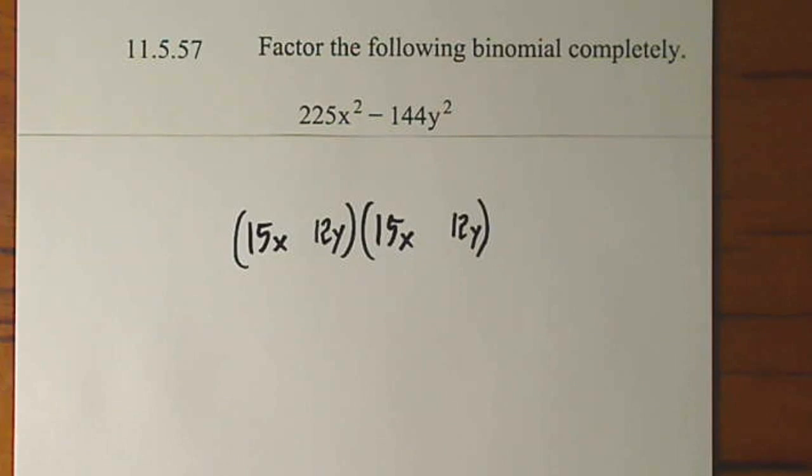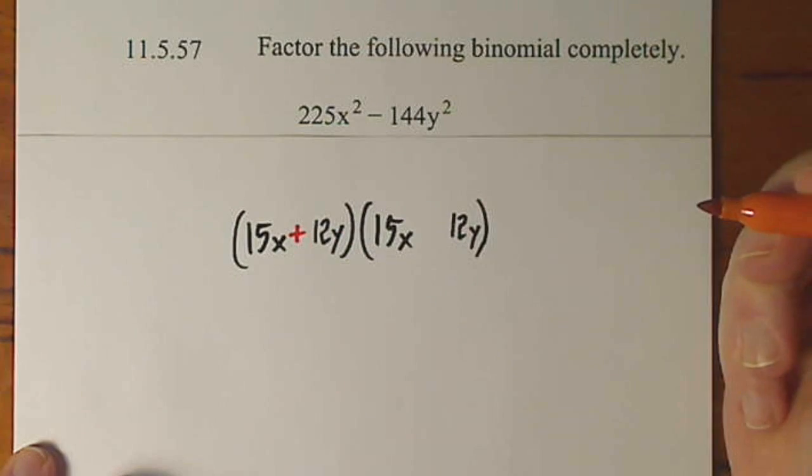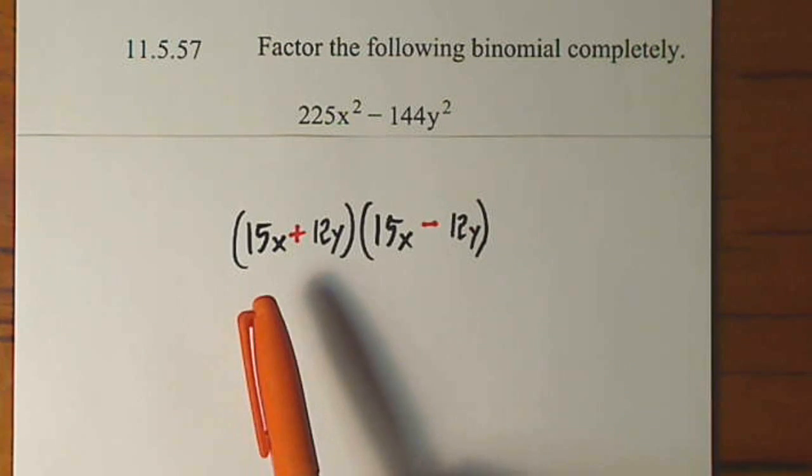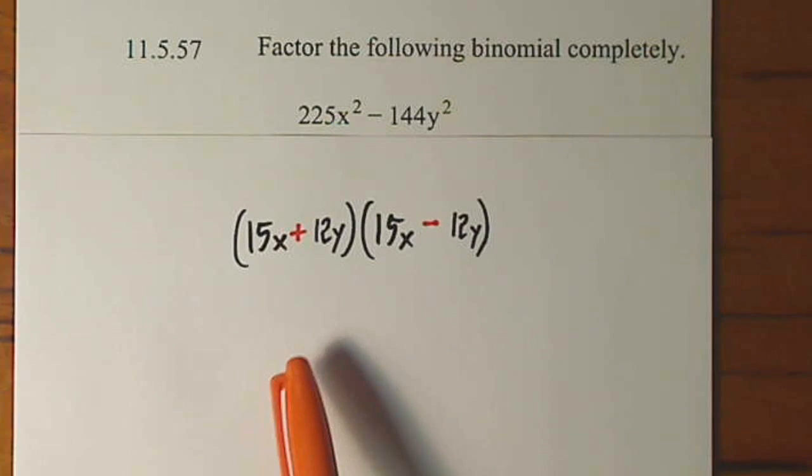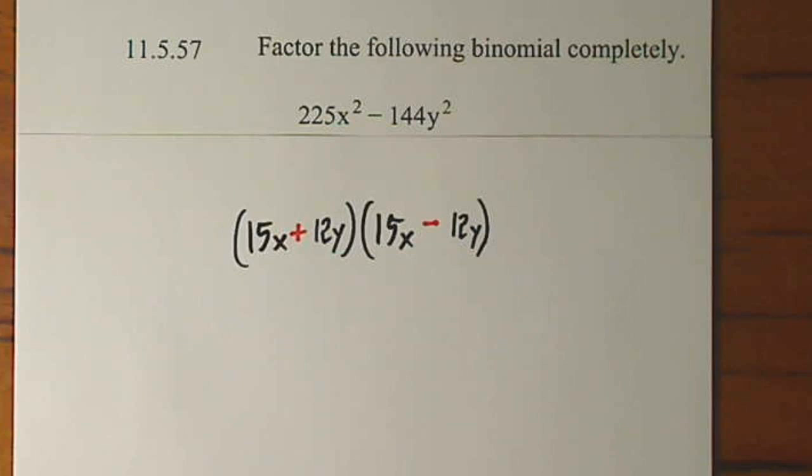And then to factor the difference of squares, you use a positive in one, a negative in the other. And that ends up canceling out your middle term. So when you use FOIL, you just end up with 225x squared minus 144y squared.